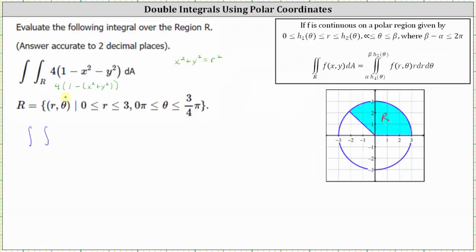...we can write four times the quantity one minus x squared minus y squared as four times the quantity one minus r squared. And differential A is equal to R dr d theta. The limits of integration for R are from zero to three. The limits of integration for theta are from zero to 3/4 pi.